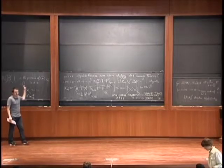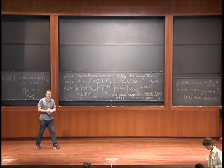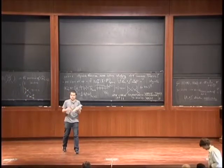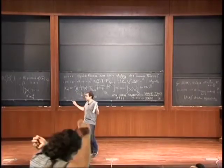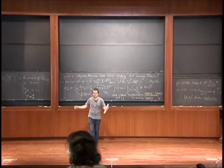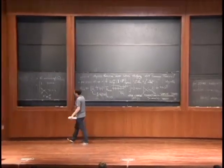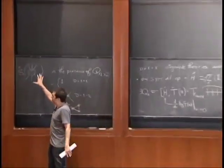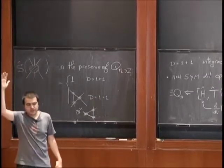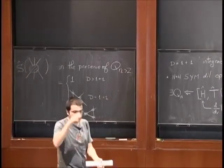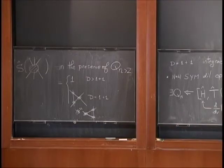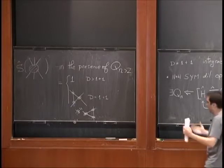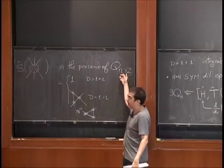The idea was we started thinking about the simplest and most natural object to consider when studying some physical theory, namely the S-matrix, in particular when we study some quantum field theory. When we have an S-matrix, we have translation and time invariance — time and space translation invariance.